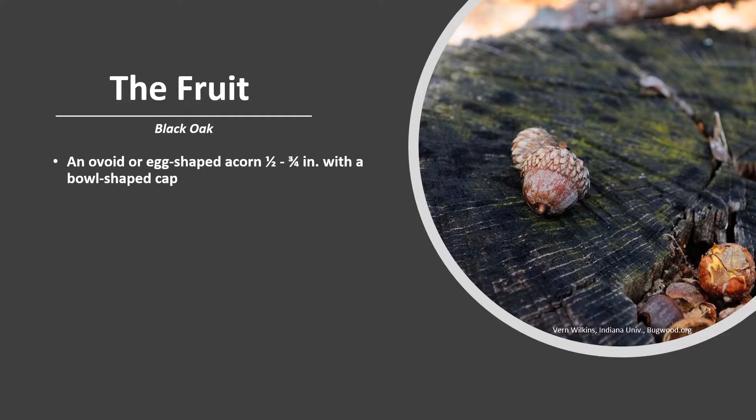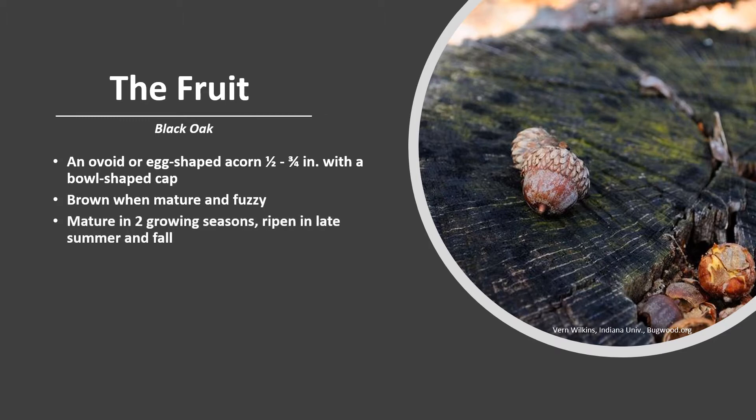The fruit is an ovoid or egg-shaped acorn that's about 1½ to ¾ inches long, with a bowl-shaped cap that covers one-third to one-half of the acorn. They are brown when mature and slightly fuzzy. The acorns mature in two growing seasons and ripen in late summer and fall, then drop, and will germinate the following spring.